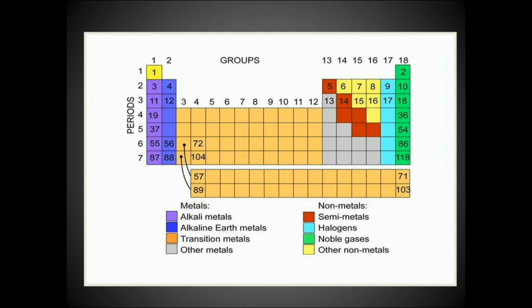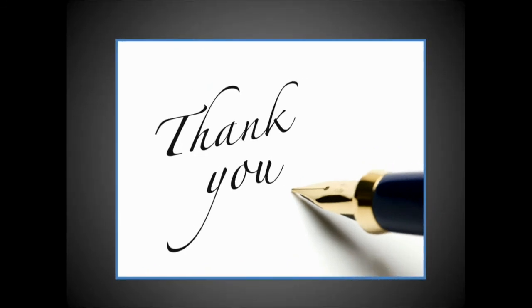Some groups have specified names: Group 1A is known as alkali metals, Group 2A as alkaline earth metals, Group 7A as halogens (salt formers), and Group 8A as noble gases. Group 6A is also noted. If you have any questions or queries regarding groups and periods, you can ask. Thank you.